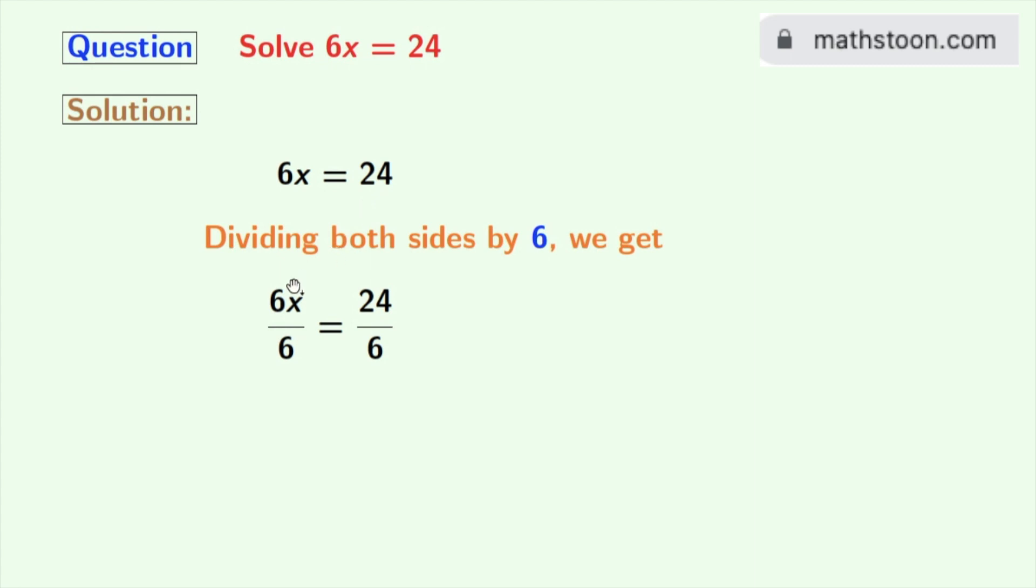So we get 6x divided by 6 is equal to 24 divided by 6. See that 6x gets cancelled. So we are left with x on the left hand side.